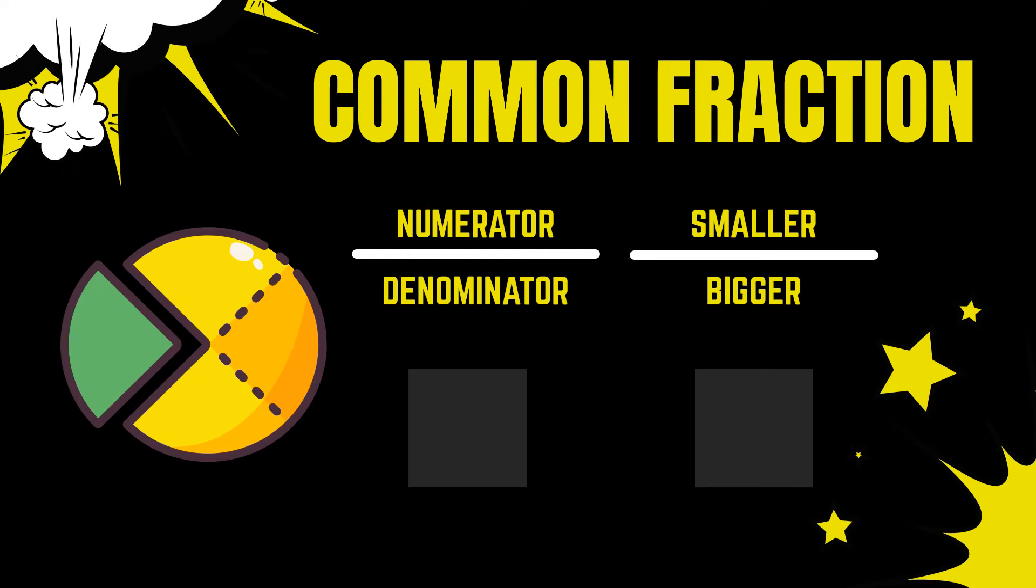Here we have a circle that has been divided into four equal parts. If we now take or remove this one part of the circle, we would have removed one part out of four parts of this circle. This is a common fraction. A common fraction is where my numerator, the top value of a fraction, is smaller than my denominator, the bottom value of a fraction. Any fraction where the numerator is smaller than the denominator is called a common fraction.